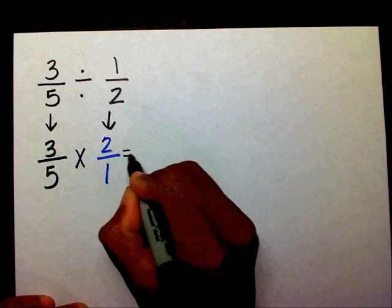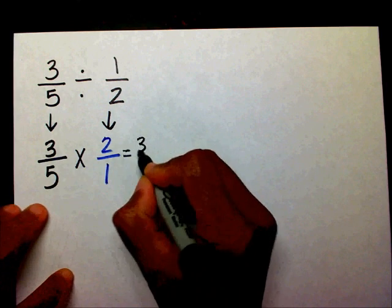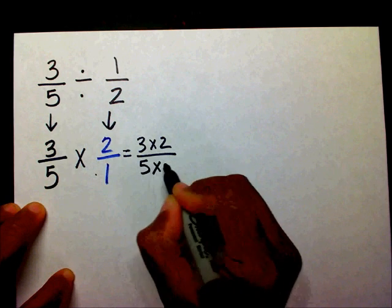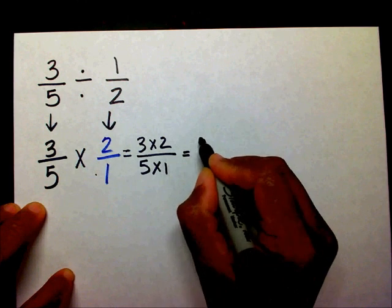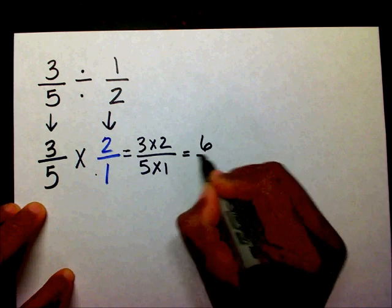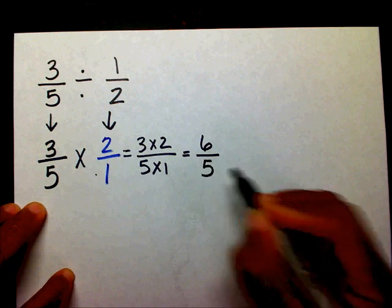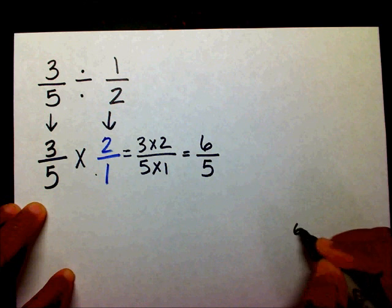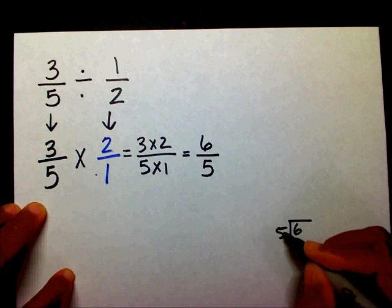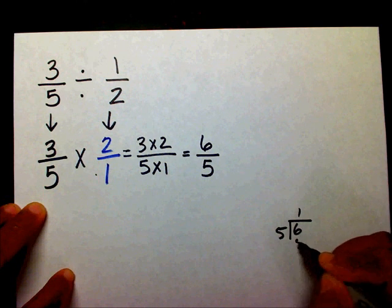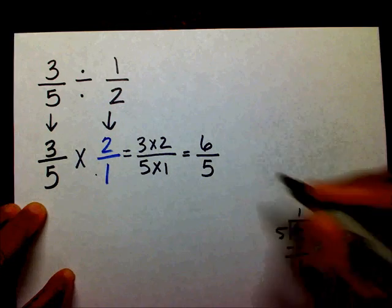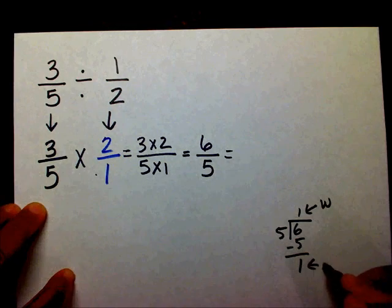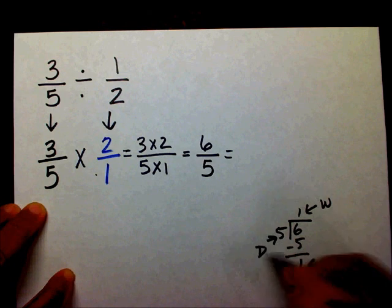So we want to just multiply across: three times two and five times one. That's going to give me three times two is six, five times one is five. I have an improper fraction, so that's going to be six divided by five. Five goes into six one time. So this is my whole number, this is my numerator.